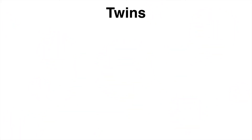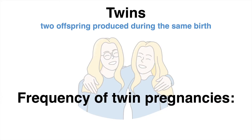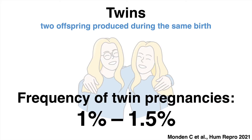Twins are defined as two offspring that are produced during the same birth. Twin pregnancies occur at a frequency of around 1% to 1.5%, with variation across different regions of the world.